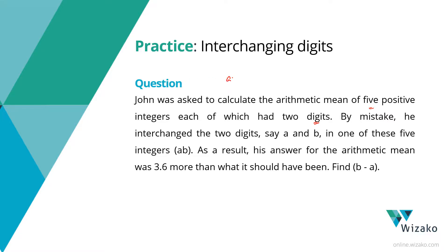The number that he should have noted down was AB. John noted down that number as BA. As a result, his answer for the arithmetic mean was 3.6 more than what it should have been. What we are asked to find out is the difference between B and A, the two digits of the number.